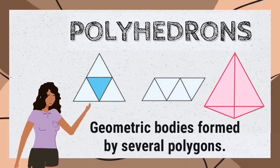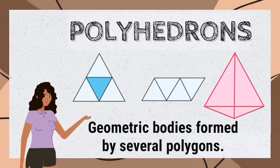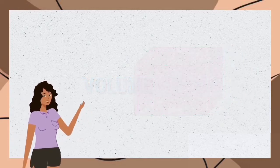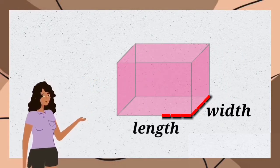Polyhedrons are geometric bodies formed by several polygons. They have volume - that is, they occupy space in three dimensions: width, length, and height.